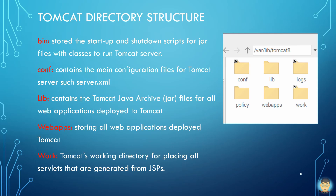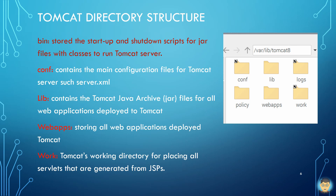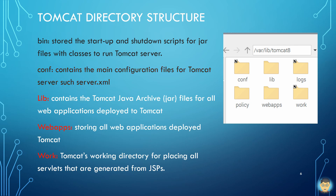There are five basic folders in the Tomcat directory, as shown in the right picture. The policy folder is not discussed in this video. The bin folder is mainly used to store the startup and shutdown scripts for JAR files with classes that are executed by Tomcat server. The conf folder contains the main configuration and security files.